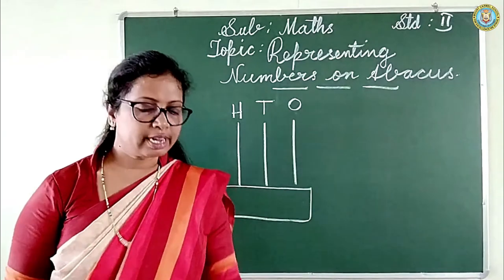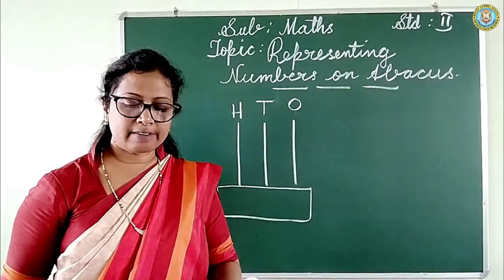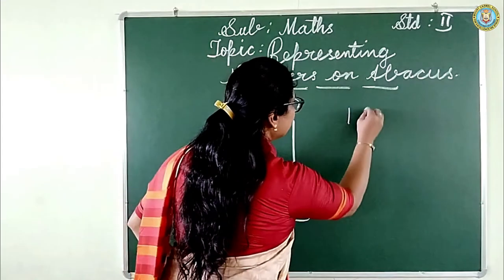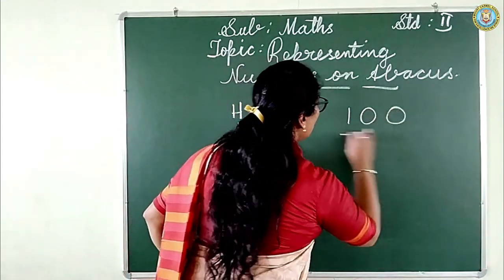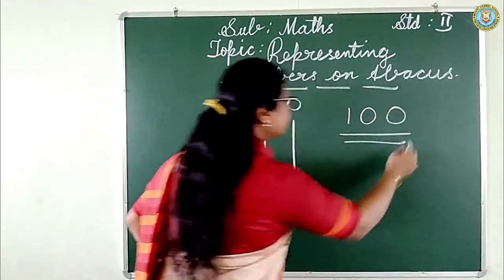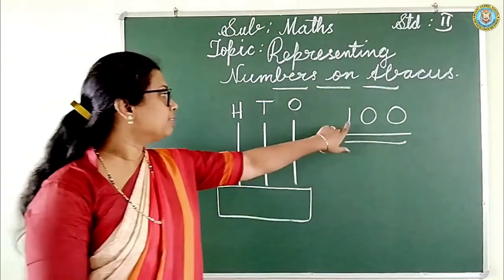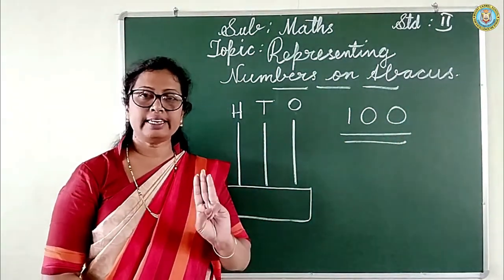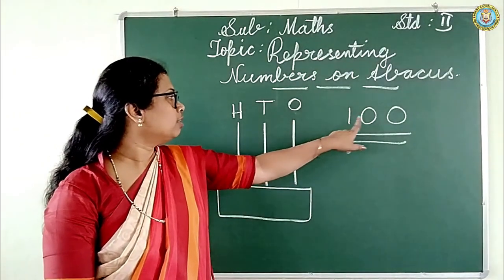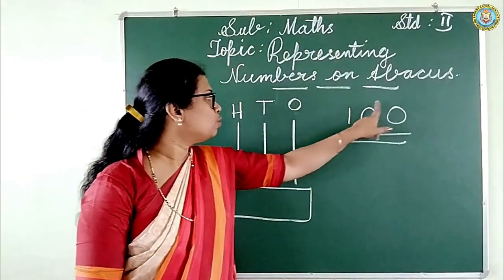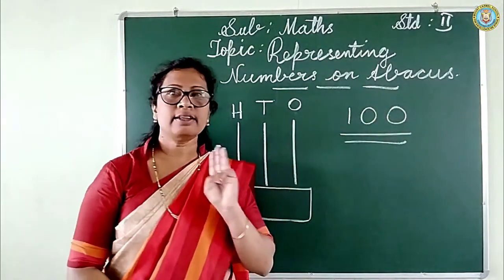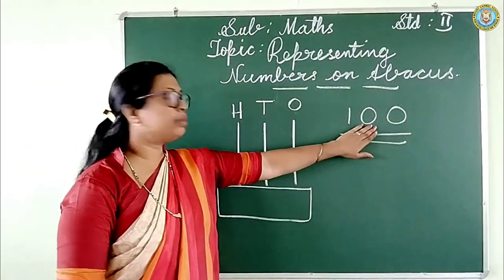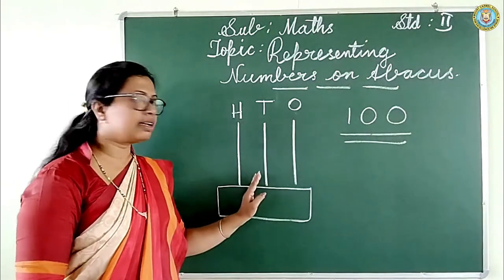The given number is one hundred. One hundred is a three digit number — one, zero, zero. So how to represent this number on abacus?